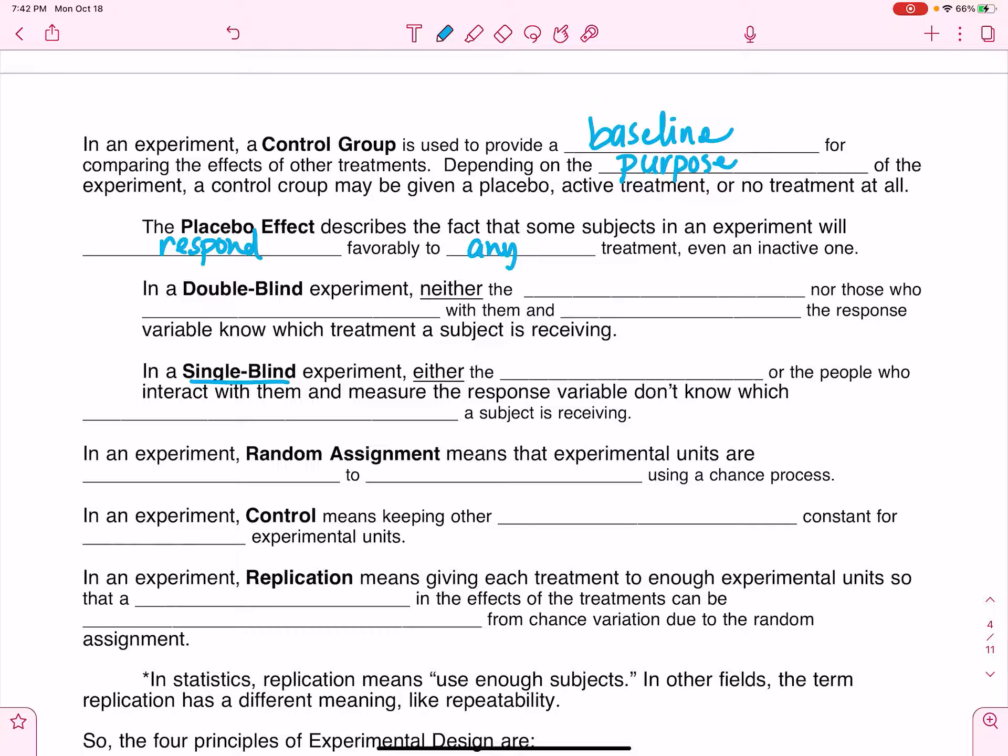In a Single-Blind experiment, either the subjects or the people who interact with them and measure the response variable don't know which treatment a subject is receiving. That means that the people involved in the experiment as the subjects, either they don't know or the people administering the drugs to them or taking their measurements.